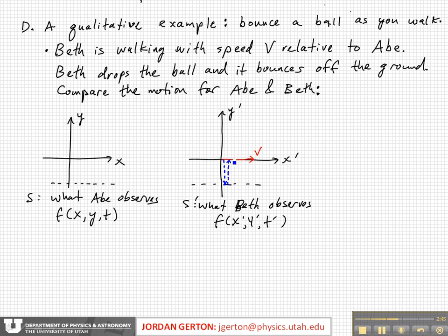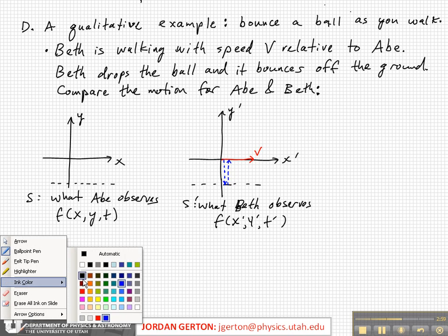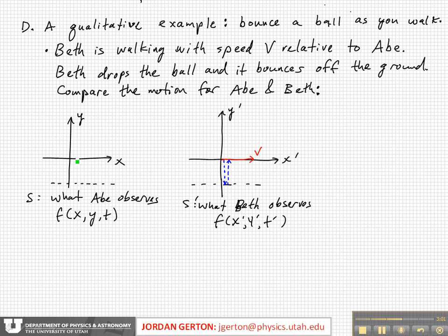Now understand that I'm drawing those two arrows separated in X prime, but in fact they lie right on top of each other. Now what does Abe see? Let's choose a different color. So he sees something that looks like this: bounces and comes back up. So obviously they see something different, because Beth's reference frame S prime is moving with respect to Abe's.